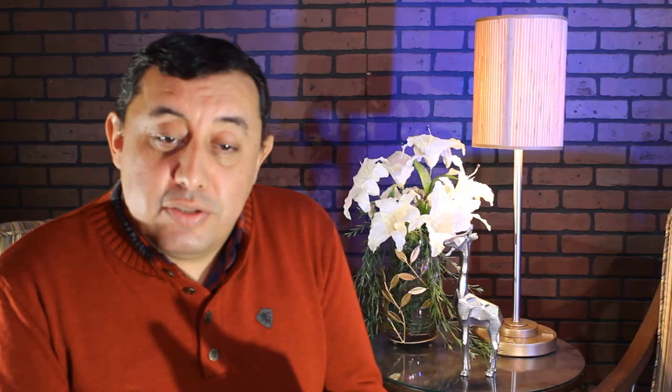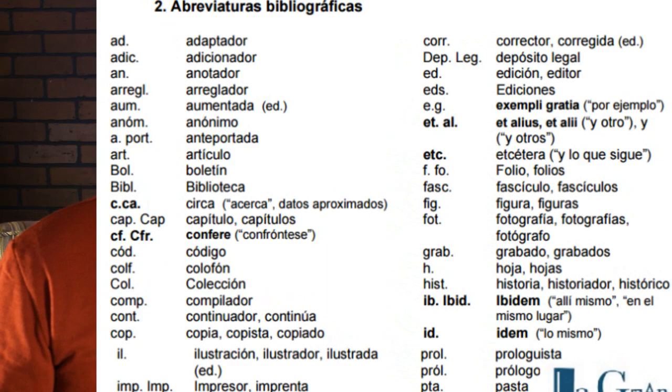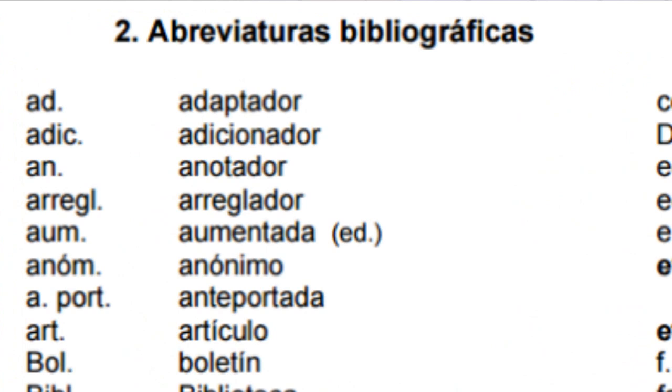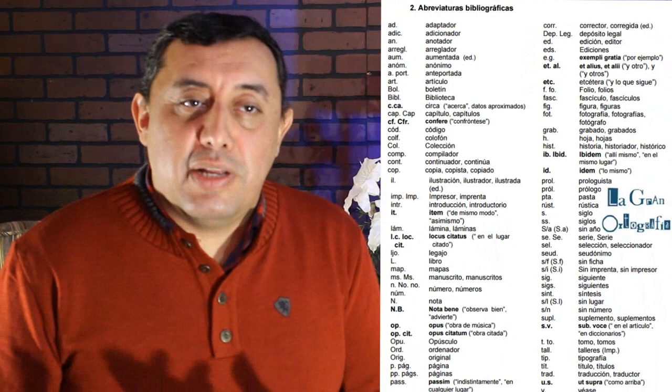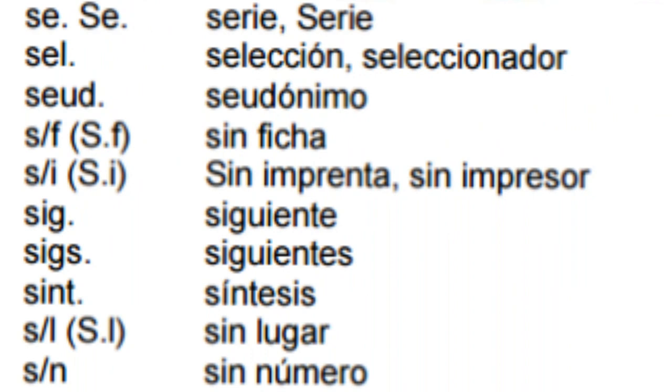Las abreviaturas bibliográficas también nos dan palabras que nos facilitan la lectura. Se utilizan para dar explicaciones o detalles sobre las fuentes. Como estamos haciendo una lectura rápida de un texto científico, por eso se utilizan las abreviaturas: para que nuestra lectura sea más rápida. Nosotros las tenemos que conocer. A lo mejor ahorita no las vas a utilizar en tus documentos, pero las vas a estar viendo en muchos libros y alguna vez te vas a preguntar qué significan. Son abreviaturas o bien locuciones latinas, y a veces se fusionan las dos.